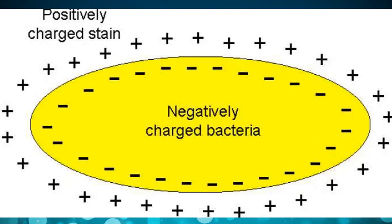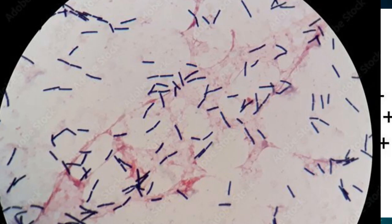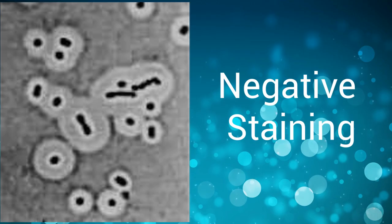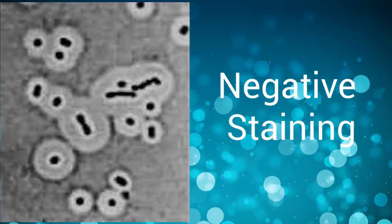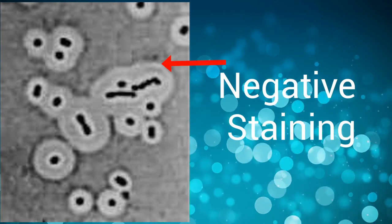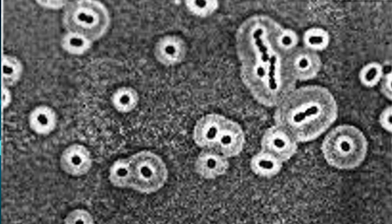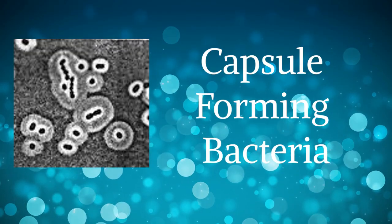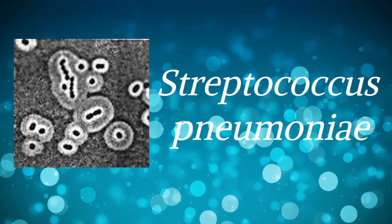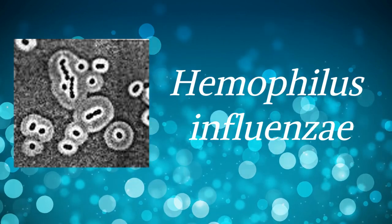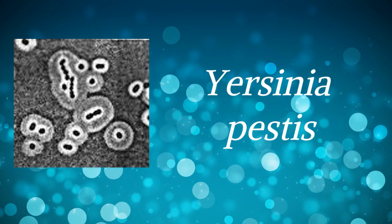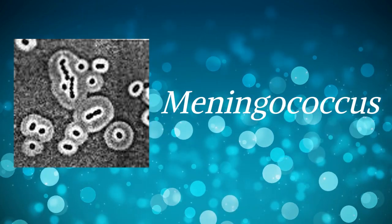Acidic dyes are repelled by bacteria, so they are used mainly for negative staining. A positive stain sticks to the bacteria and gives it color, whereas a negative stain does not stick to the specimen but settles around its outer boundary. Nigrosin, which has a blue-black color, and India ink, a black suspension of carbon particles, are commonly used for negative staining. Negative staining is also used to visualize the capsule — a protective layer surrounding some bacteria. Common capsule-forming bacteria include Streptococcus pneumoniae, Klebsiella pneumoniae, Haemophilus influenzae, Bacillus anthracis, Yersinia pestis, and Meningococcus.